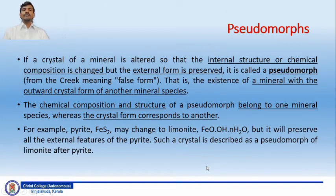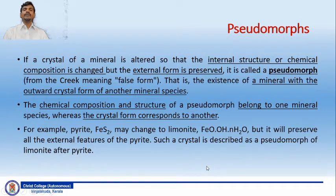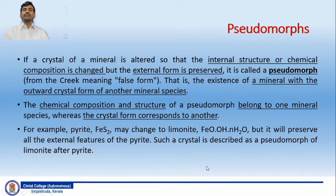If a crystal of a mineral is altered so that the internal structure or chemical composition is changed, but the external form is preserved, then we call it a pseudomorph. The term is derived from a Greek word meaning 'false form' — the existence of a mineral with the outward crystal form of another mineral species, but internally different.